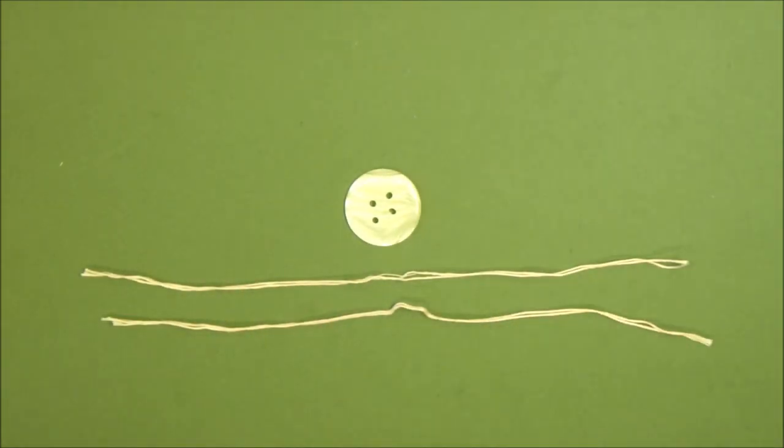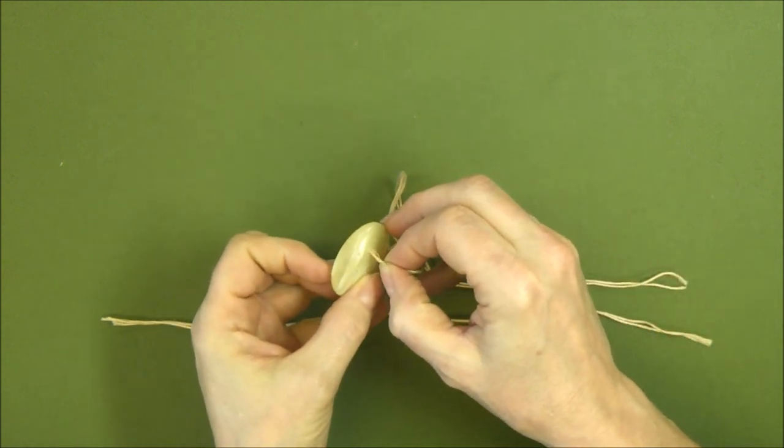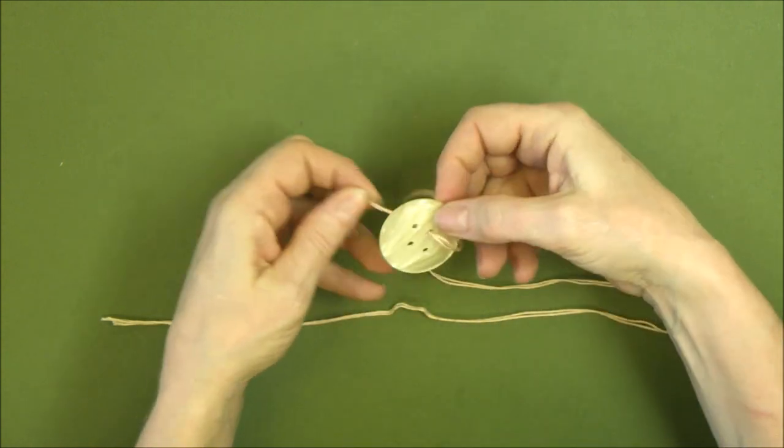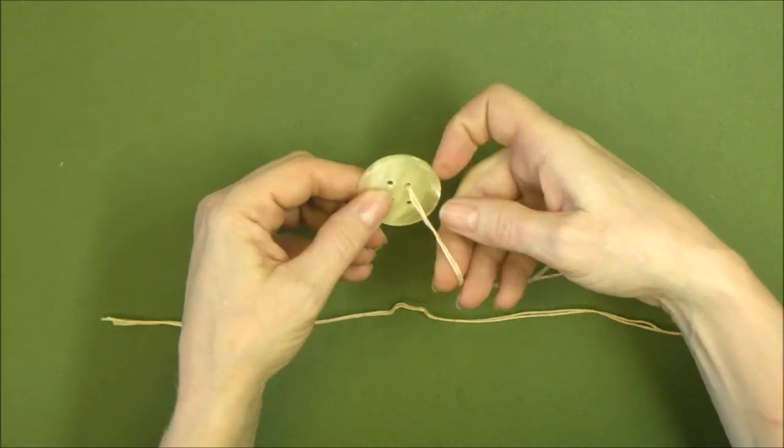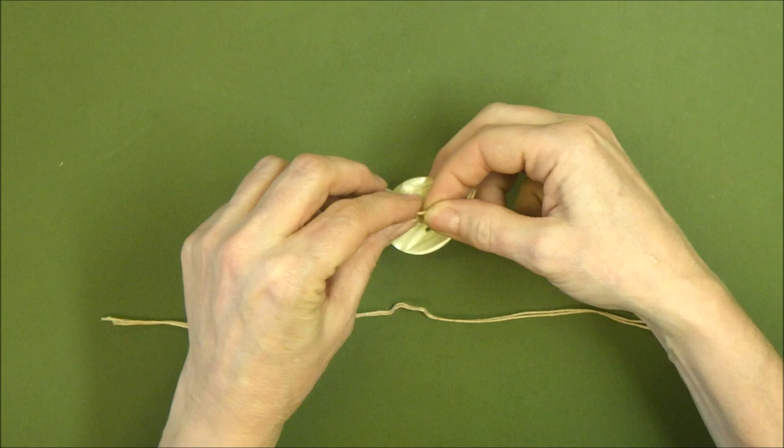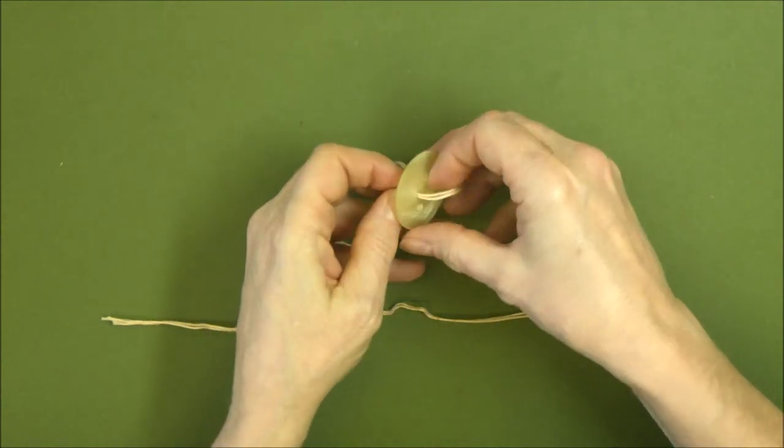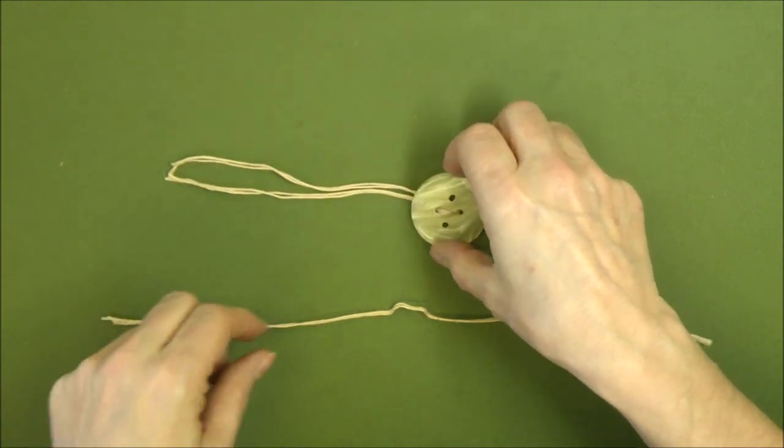I've cut four lengths of my stranded cotton to 30 centimeters. I'm taking two of those and passing them through a hole in my button, then passing the other end through the opposite hole. If your button only has two holes, just pass all four threads through the same two holes.